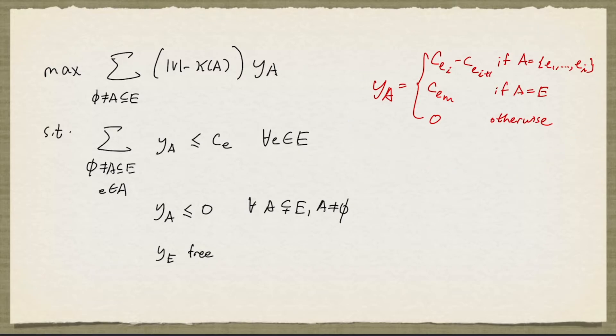So for every set a that is e1 up to ei, we let y_a be the cost of ei minus the cost of ei plus 1. Because the costs of e1 up to em are in non-decreasing order, this must be non-positive. And for the variable y_e, we assign the cost of the edge em. And this is okay because y_e is free. And everything else is 0.